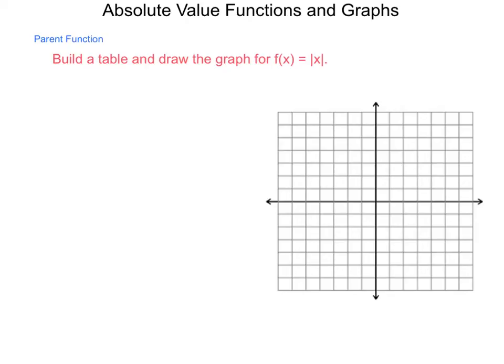In this lesson, we're going to be graphing and looking at the functions of a mildly linear function, the absolute value function. The reason we consider this to be a mildly linear system is because it does involve straight lines, but it also has a turn in it. So we're going to begin with the parent function.